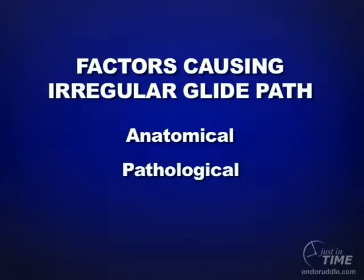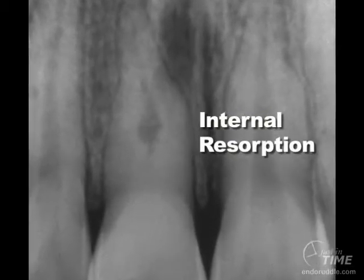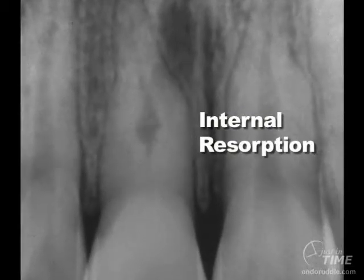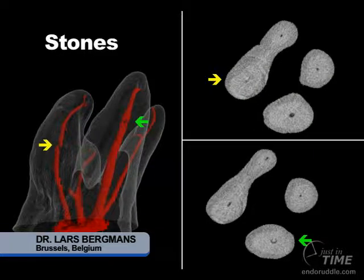Sometimes pathological conditions exist like internal resorption, and it is not easy to slide a file through the resorptive defect to pick up the canal on the more apical side. Other pathological conditions occur when teeth degenerate endodontically, and that could be the presence of stones. In this illustration from Lars Bergman's, the yellow area shows a transverse section through the mesial buccal root. The smaller canal is open and patent, but where the arrow is there is a stone attached to the internal wall. The green arrow shows a deeper calcification in the distal buccal system, and at this slice level all roots have open patent canals but the DB again has a stone. These stones can prevent instruments from sliding to length.